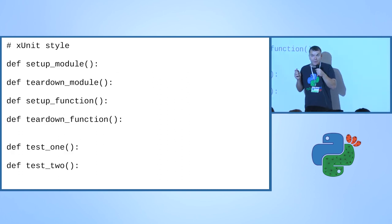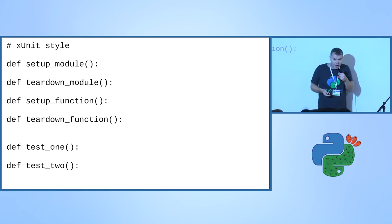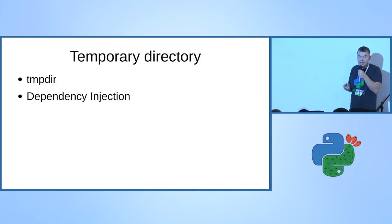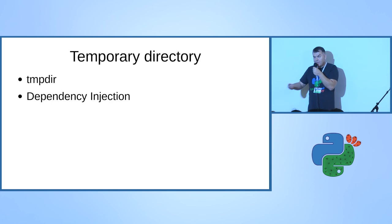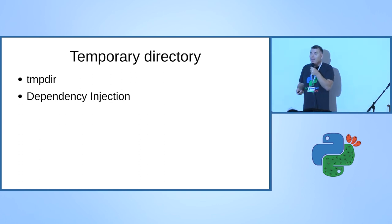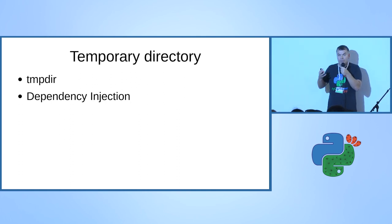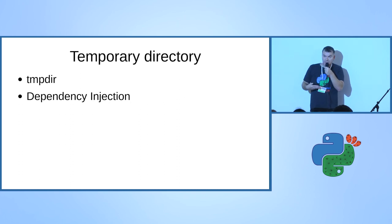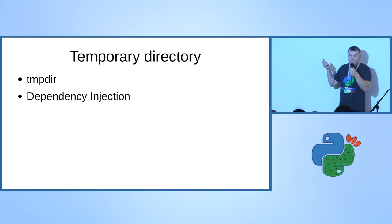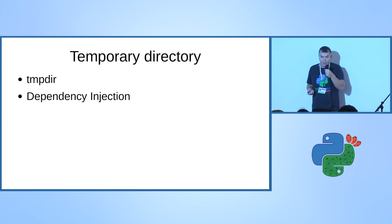There are a couple of ways to write fixtures in PyTest. One is using the xunit style used by many other languages. But we're going to look at something more interesting. The first example is using a temporary directory. Whenever your application needs to interact with the file system - write a file or read some configuration file - you want to make sure that every test has a separate directory and separate files to use. PyTest uses something called dependency injection for this.